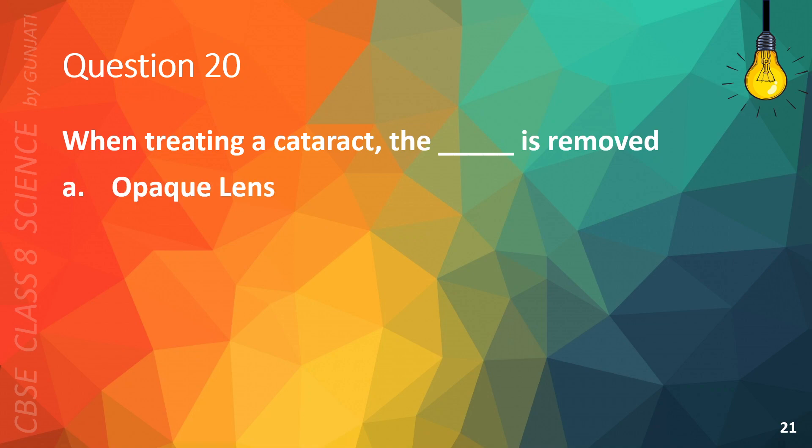Question 19. When treating a cataract, the blank is removed. A. Opaque Lens, B. Retina, C. Iris, or D. pupil. The correct answer is A, Opaque lens.